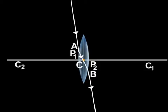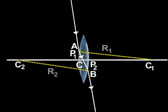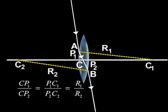The ray will suffer only some lateral displacement. The optical center C of the lens divides its thickness in the ratio of the radii of curvature of two surfaces of the lens. Thus, CP1 by CP2 is equal to P1C1 by P2C2, which is equal to R1 by R2, where R1 and R2 are the radii of curvature of the two surfaces of the lens.